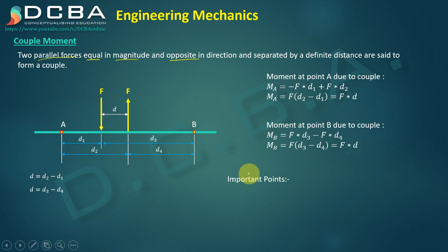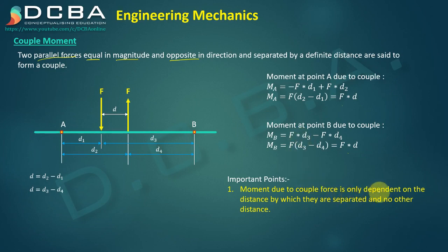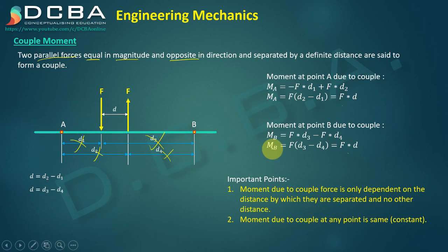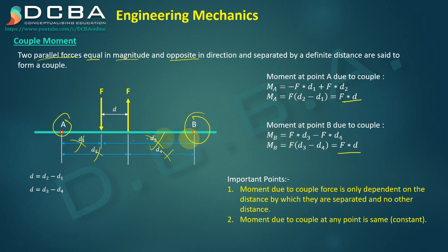From this we have important conclusions. First, the moment due to couple force is only dependent on the distance by which they are separated, and no other distance. You can see that the moment at any point is obtained by multiplying the force by the distance separating them — I don't need any other distance. Second, the moment due to a couple at any point remains the same. Whether I take point A or point B, the moment is f times d, and at any other point on the structure I will get the same value.